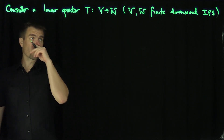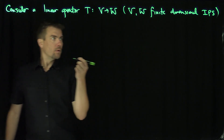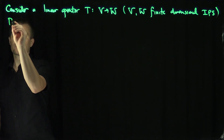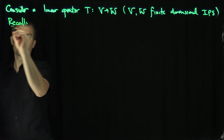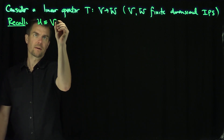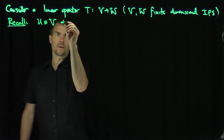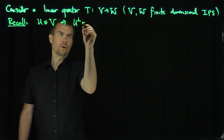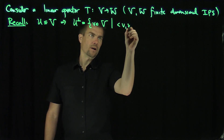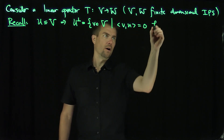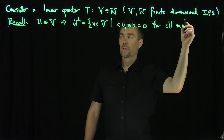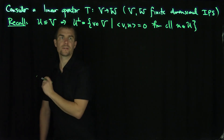We can consider perpendicular subspaces with this idea of an inner product. Let's recall that if U is a subspace of either of these spaces, then we can define U-perp to be the set of all vectors V such that the inner product of V with U is equal to zero for all U in U. That's the perpendicular subspace.